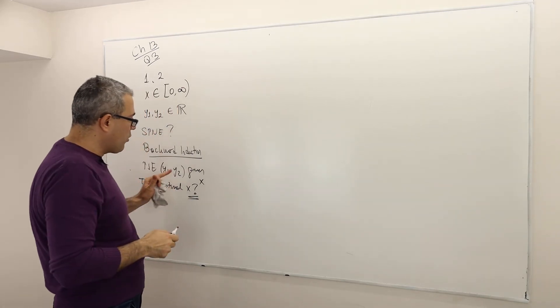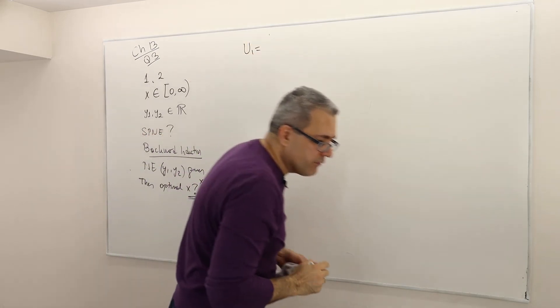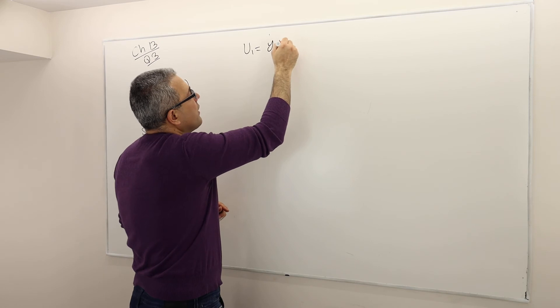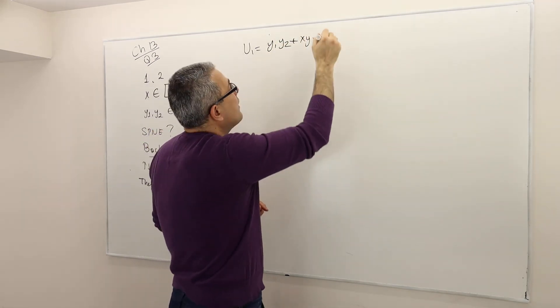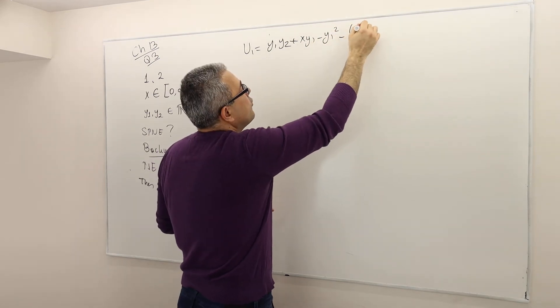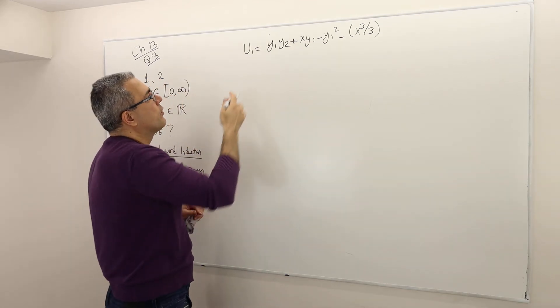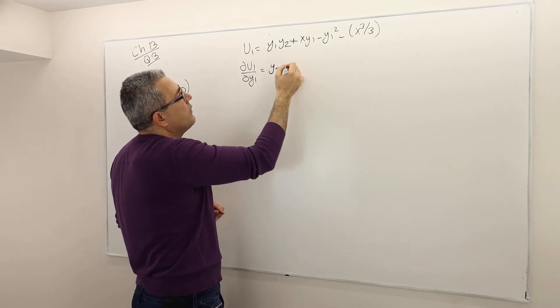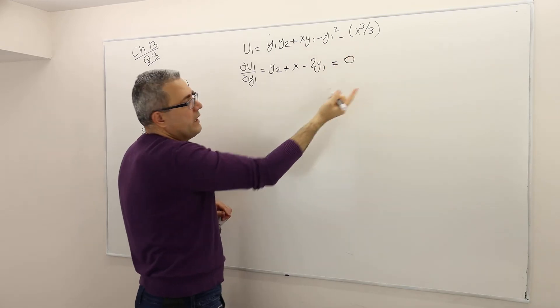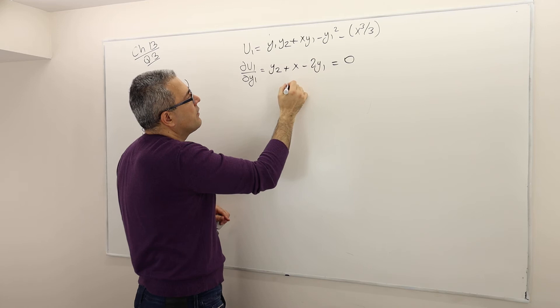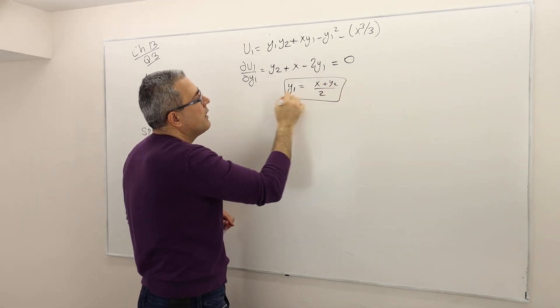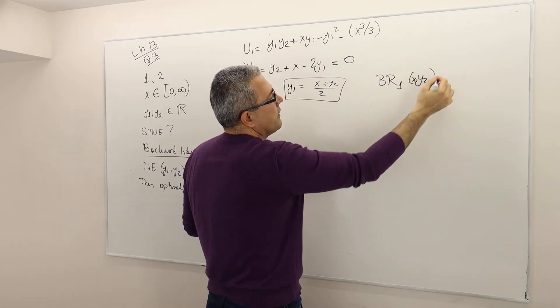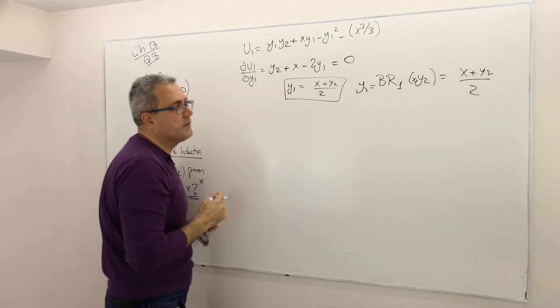So here's how we find the optimal strategies for Y1 and Y2. Remember U1 was y1·y2 + x·y1 - y1² - x³/3. So I would like to find the best response function for player 1. How do I do that? Well, what is the partial derivative with respect to Y1? So it's going to be y2 + x - 2y1 = 0. I'm solving the first order conditions. So therefore, y1 equals (x + y2)/2. That means the best response function for player 1 given y2 and x is equal to (x + y2)/2.